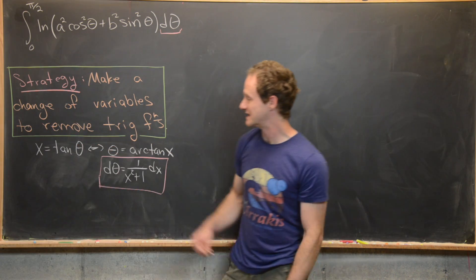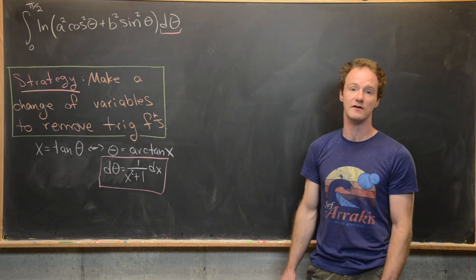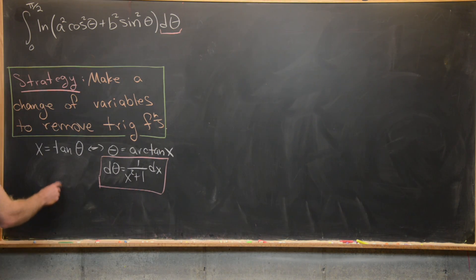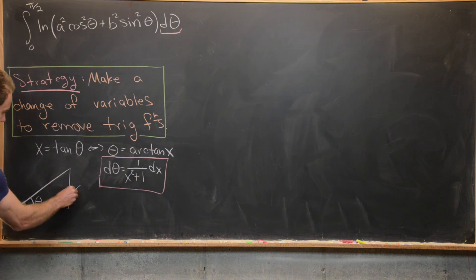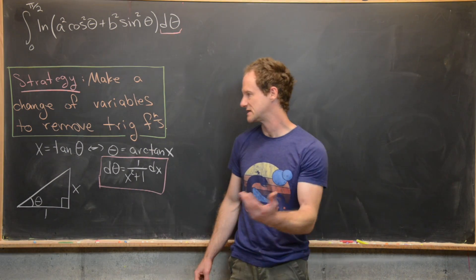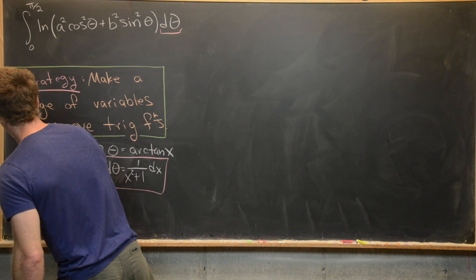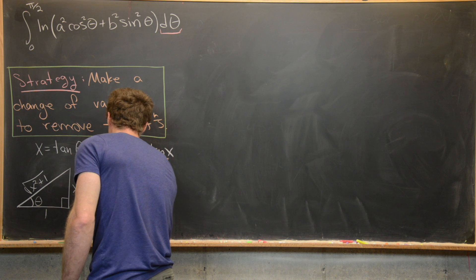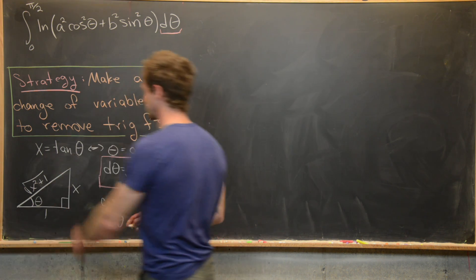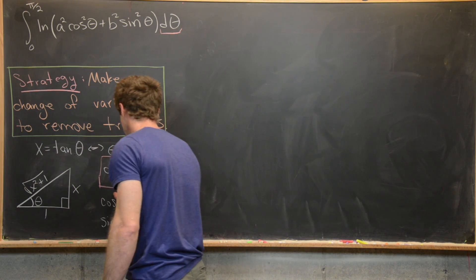Now what we'd like to do is use the defining relation x equals tangent theta to get equations for cosine and sine in terms of x. We can do that by drawing a triangle. We give it an angle of theta with the right angle, and since tangent of theta is x, the opposite is x and the adjacent is one, because tangent theta is x over one. By the Pythagorean theorem, the hypotenuse is the square root of x squared plus one. Now we can calculate cosine squared and sine squared of theta from this completed triangle, because that's what shows up in the integral.